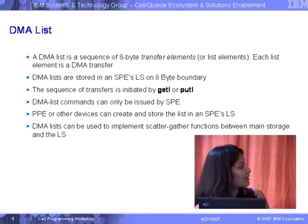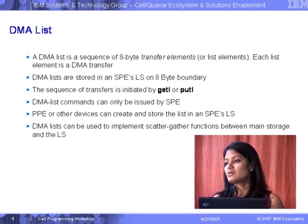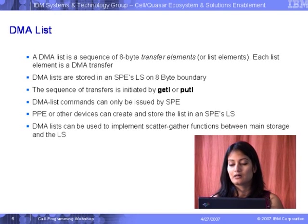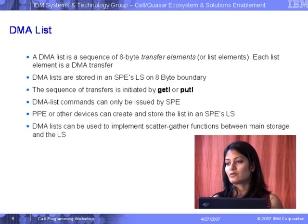DMA lists and double buffering are two effective techniques we deploy in applications to override the overhead for data communication and I/O transfer. Now there are basically two important aspects to DMA lists: you have to specify how many transfer elements there are — every transfer element is about eight bytes — and each element specifies one transfer.